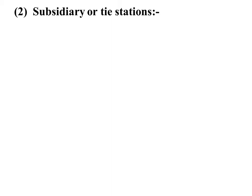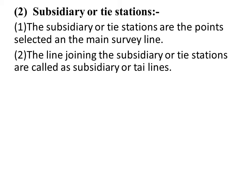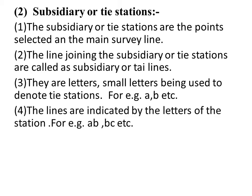The subsidiary and tie stations are the points selected on the main survey line. The lines joining the subsidiary or tie stations are called subsidiary or tie lines. Small letters are used to denote these stations, and the line is indicated by the letters of the stations.